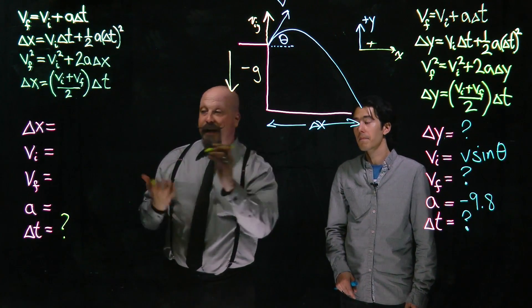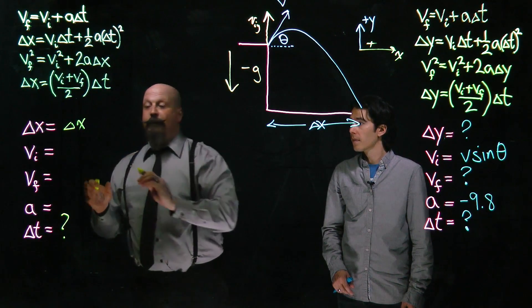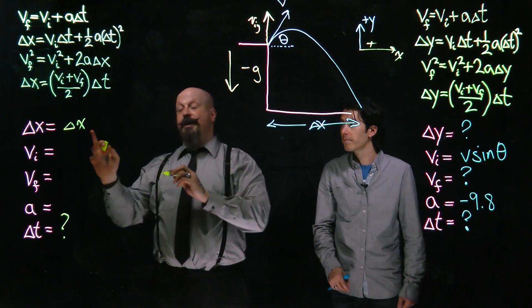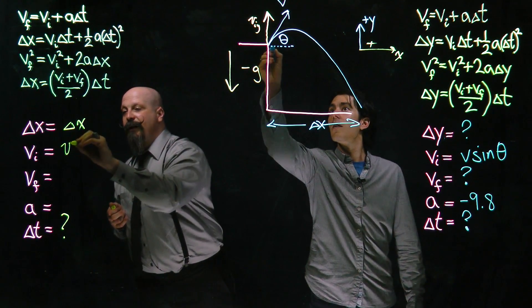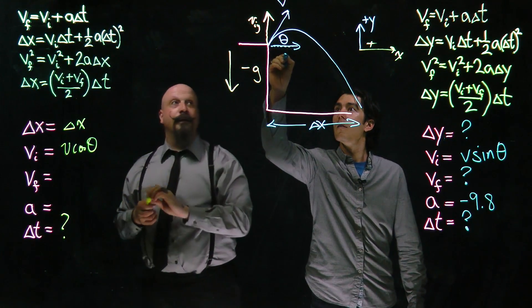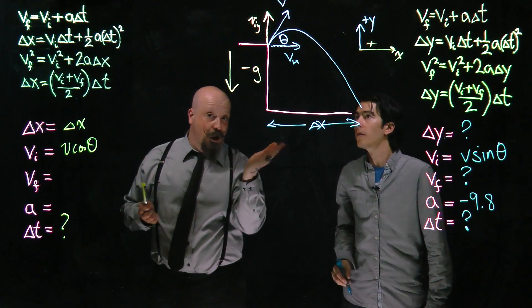Now going through the other information, delta x is given to me, so I likely know what that number is. The initial velocity is now just the other component. It's v cosine of theta, the projection of the velocity going in the x direction.